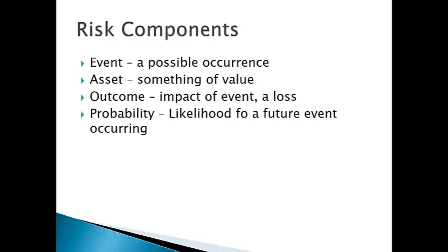The main risk components are described on pages 4 and 5 of the text. First is an event — a possible occurrence but not certain, always a future event in the context of a risk assessment. It can be an action or an inaction; an event can occur by omission. An asset is the target of an event — something valued in your organization. It's not just the target but that target must have some value. The outcome is the impact of the event, what you might call the exposure.